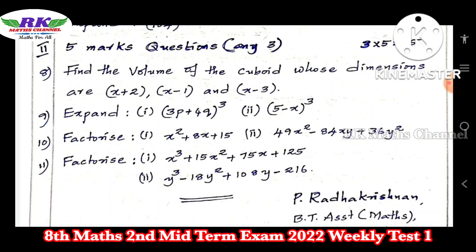Question number 9: Expand (3p + 4q)³ and (5 - x)³. So a + b whole cube and a - b whole cube formulas are used.